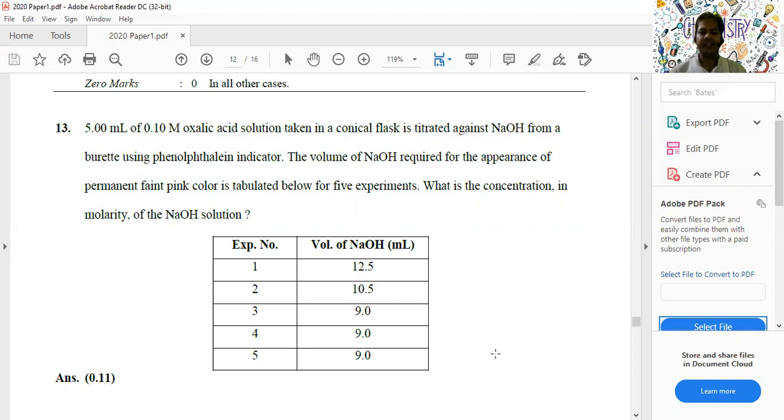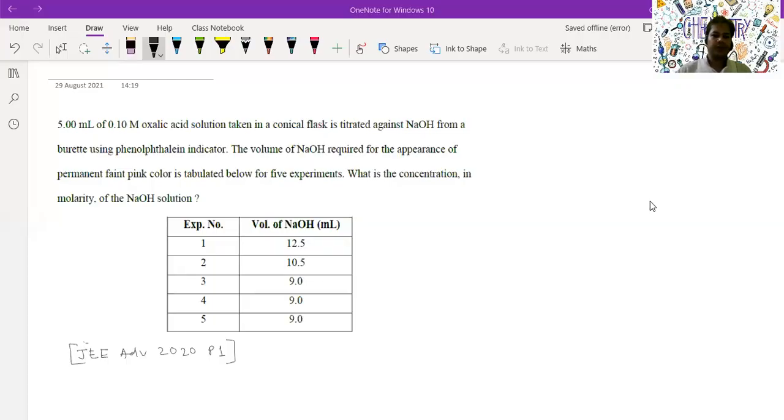Now normally how do we solve it? The normal concept is we find out the average volume of NaOH consumed and equate the equivalents of NaOH and oxalic acid, and we'll find out the molarity of NaOH by equating the number of equivalents. But what a common mistake students do is they consider all these five observations and take the average.